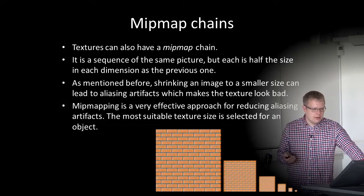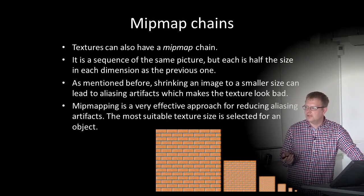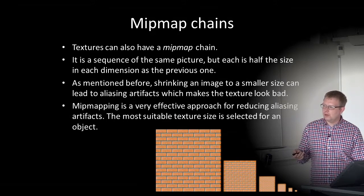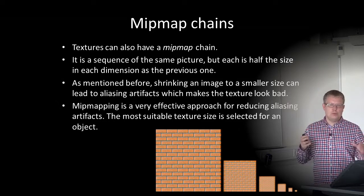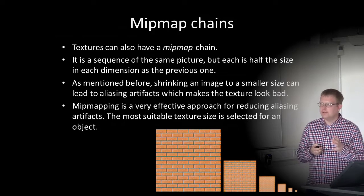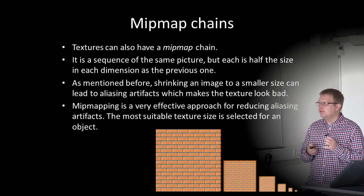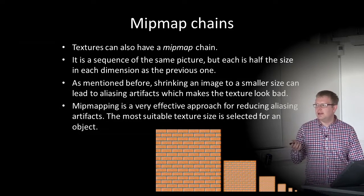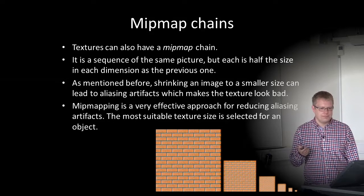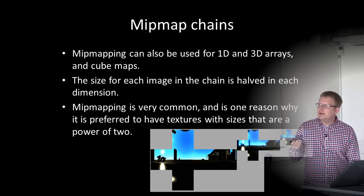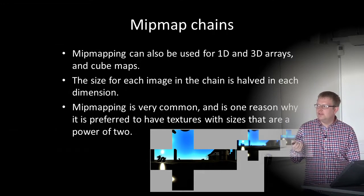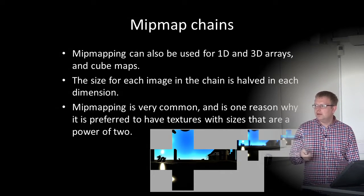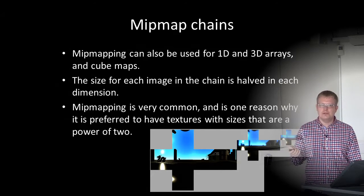Textures can also have a mipmap chain — a sequence of the same picture where each entry is half the size in each dimension as the previous one. As mentioned before, when we shrink an image to a smaller size we can have serious aliasing artifacts. Mipmapping is a very effective approach for reducing these aliasing artifacts because we select the most suitable texture size when rendering an object. Mipmapping can also be used for 1D and 3D arrays and cube maps. Mipmapping is very common and is one reason why texture sizes that are powers of two are preferred — because they are easy to cut in half.